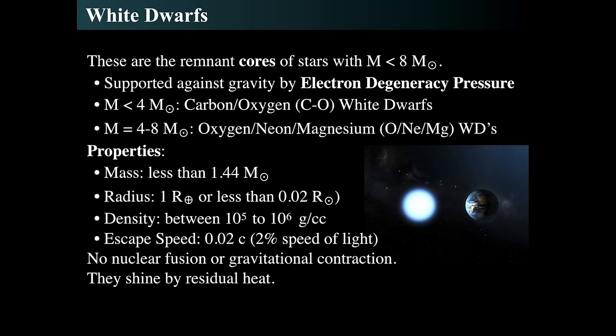White dwarfs, because of the electron degeneracy pressure, do not shine by nuclear fusion or by gravitational contraction — they're not going to contract anymore. They stay at the same radius forever. They shine because the protons and helium, carbon, oxygen, neon, and magnesium nuclei inside are still hot, with equivalent temperatures of tens to hundreds of millions of degrees. Any hot gas glows, so what we see is the residual heat of those nuclei glowing.